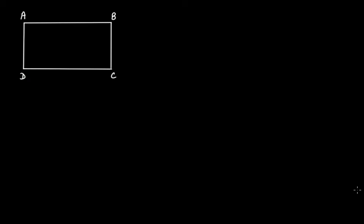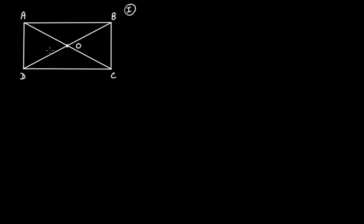In a rectangle, the two diagonals bisect each other and the two diagonals are of equal length, and we have to prove the same. If this is diagonal BD and this is diagonal AC, then we have to prove that the two diagonals bisect each other and are of the same length. Let's suppose that this is the point of intersection of the two diagonals and let's name it O.